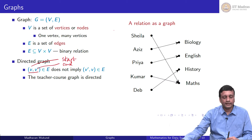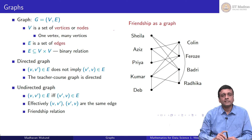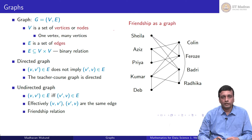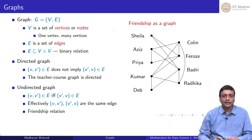The teacher-course graph is directed. On the other hand, supposing we are looking at a bunch of people and trying to capture which of them are friends of each other — this becomes an undirected graph. Presumably, if Sheila is a friend of Badri, then Badri is also a friend of Sheila, because friendship is not a one-directional thing. In this case, we do not have an arrow. We just have pairs which represent a symmetric relation — if (a, b) is in the relation, then (b, a) is also in the relation. So if (v, v') is an edge, then (v', v) is also an edge.